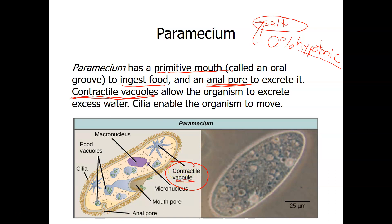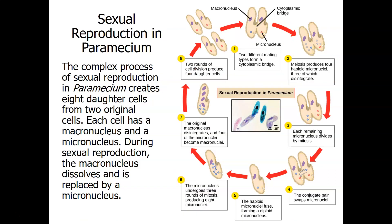The life cycle of the paramecium is pretty interesting. It does not have a male and female, but it does have two different mating types. A paramecium can reproduce asexually by binary fission, similar to a bacterium, but it can also undergo sexual reproduction called conjugation.